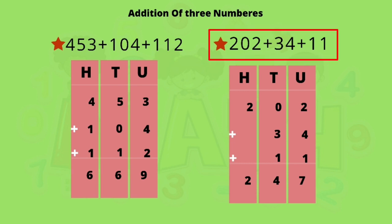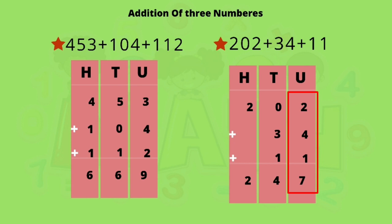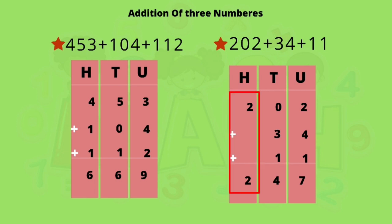Now the next sum: 202 plus 34 plus 11. Arrange vertically and then solve. From the units column: two units plus four units is six units; six units plus one unit is seven units. In the tens column: zero tens plus three tens is three tens; three tens plus one ten is four tens. In the hundreds column we have 200, so the answer is 247. Thank you.